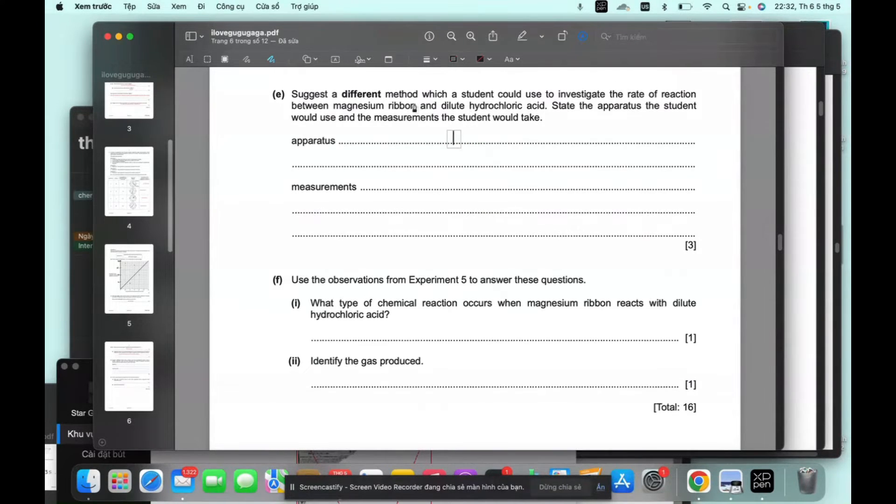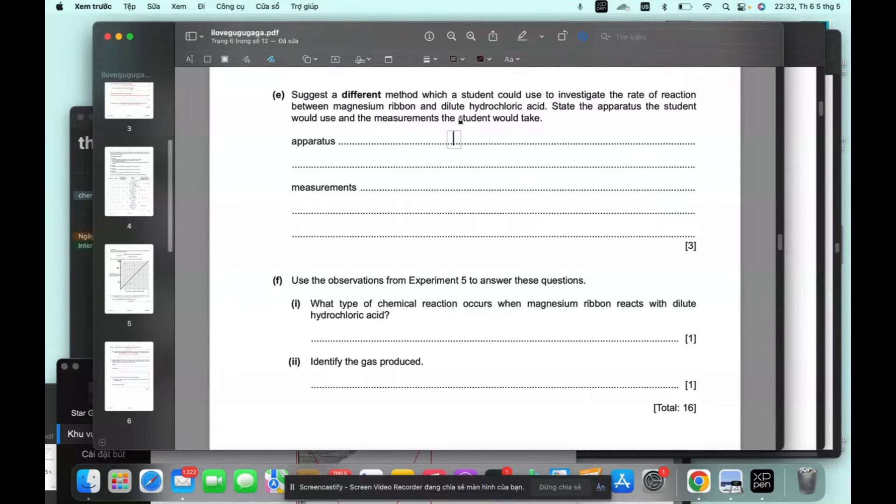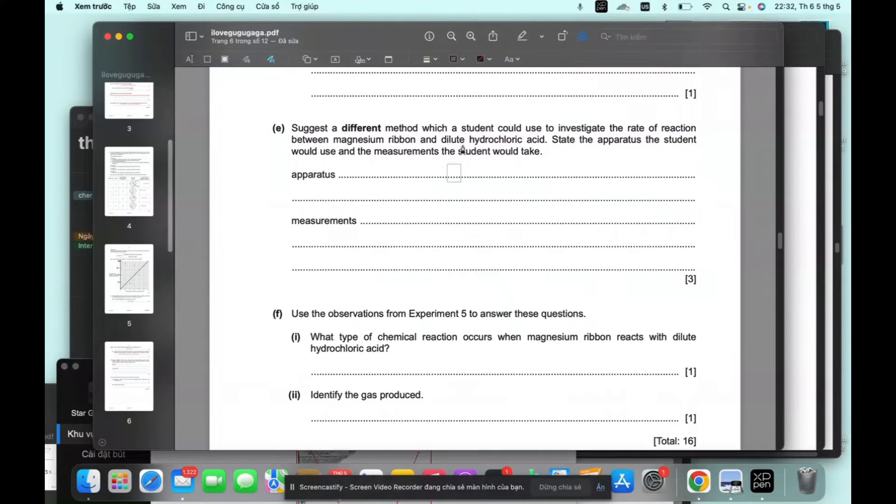Such as a different method to experience. To get a reaction between magnesium ribbon and dilute hydrochloric acid. We could, because Mg plus HCl. You know what we would make? MgCl and H. MgCl2. 2HCl here. And H, H2.